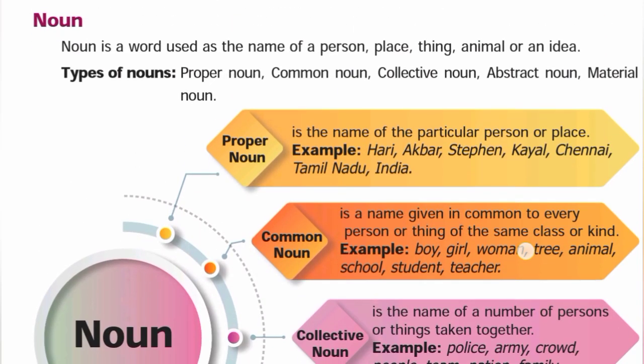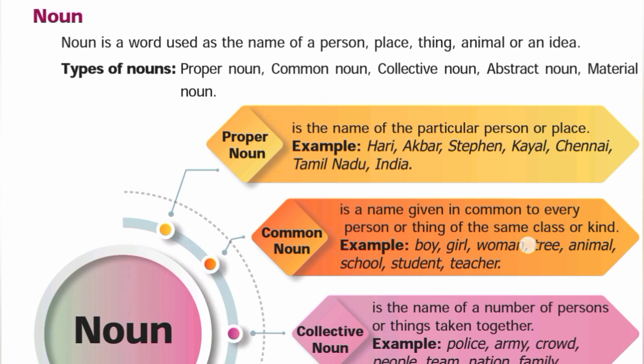A noun is a word used as the name of a person, place, animal, or thing. We have already learned that a noun is the name of a person, place, animal, or thing. These are the types of nouns.